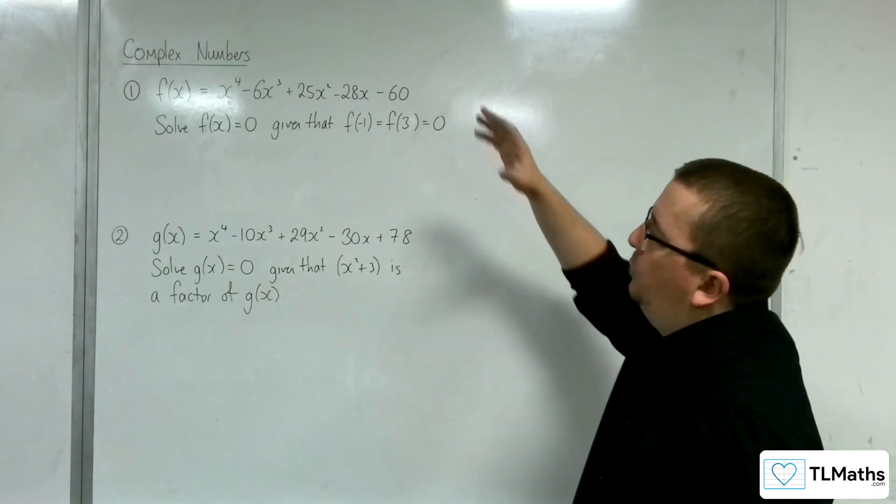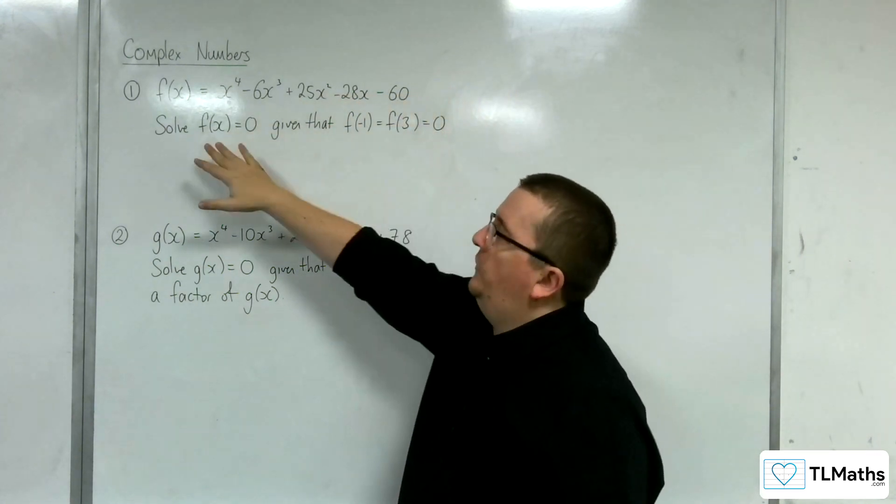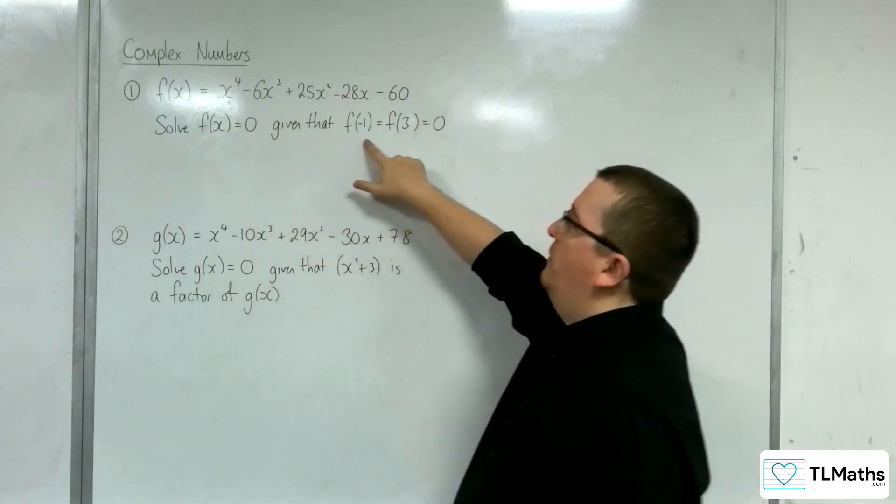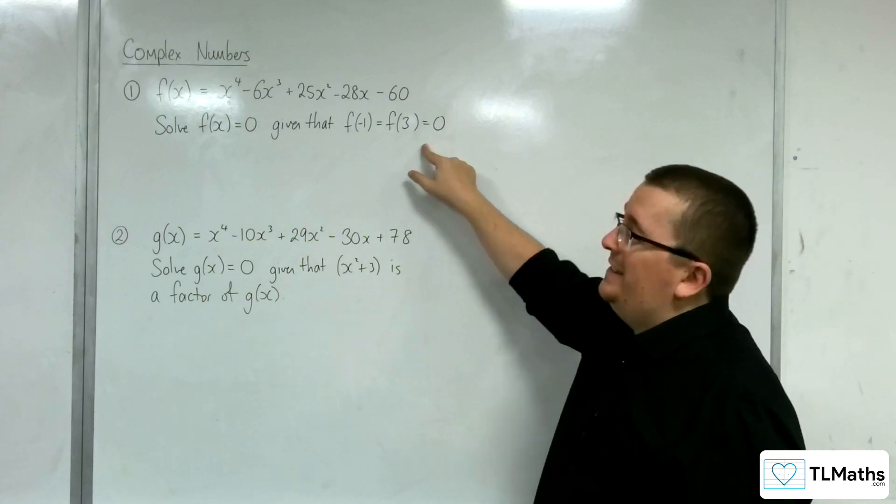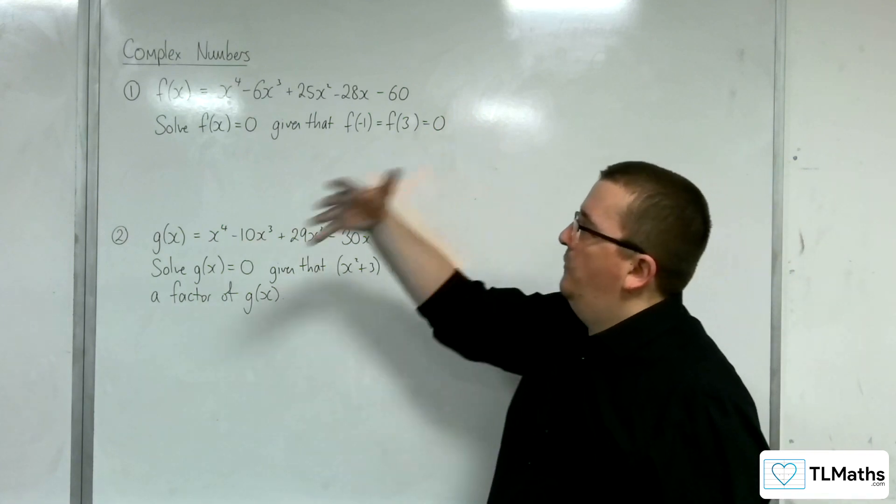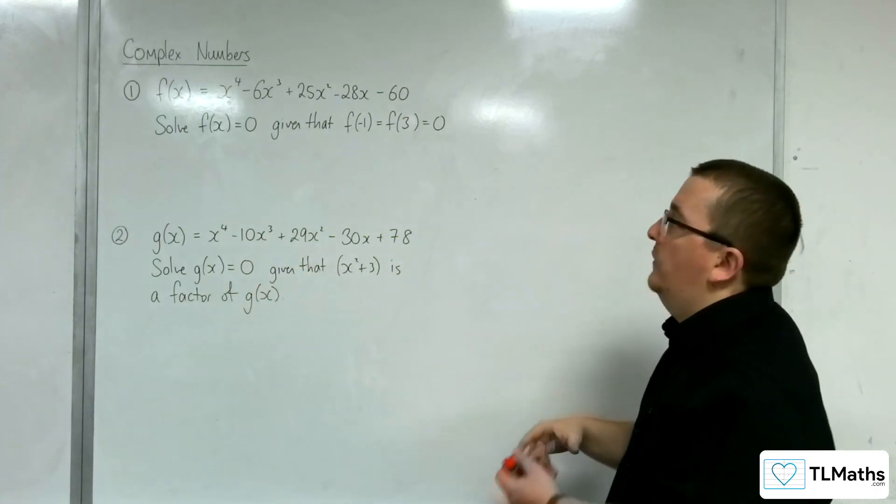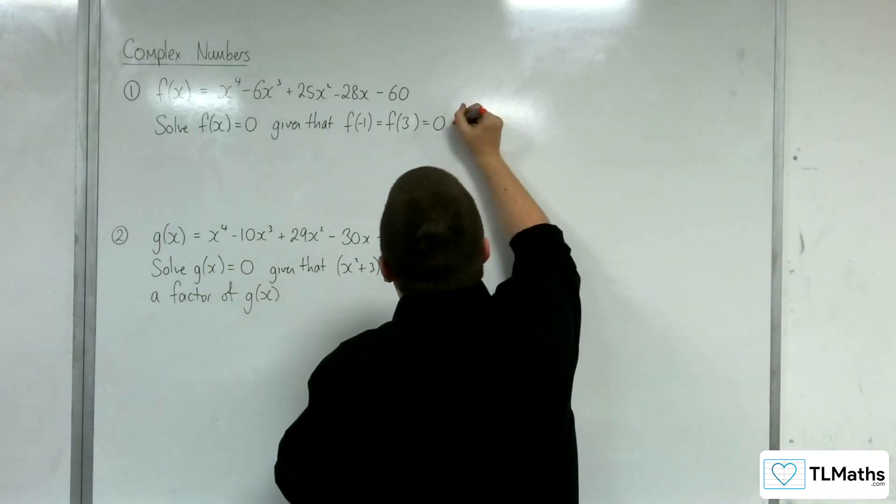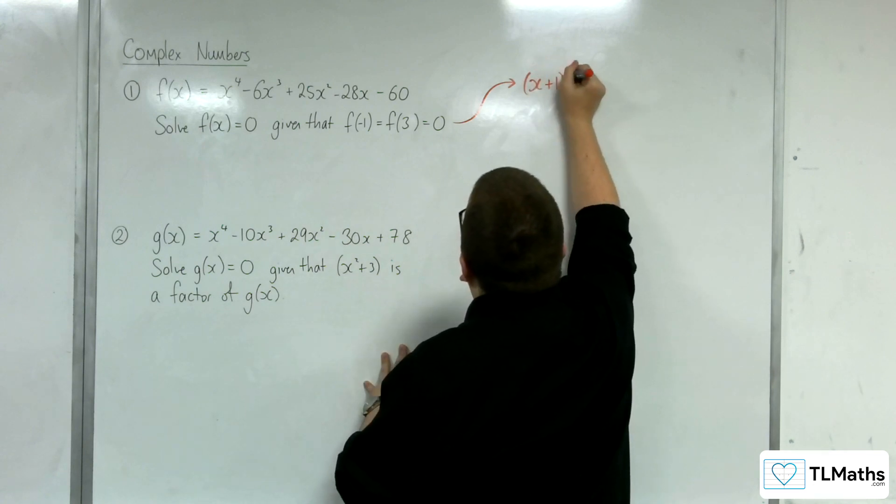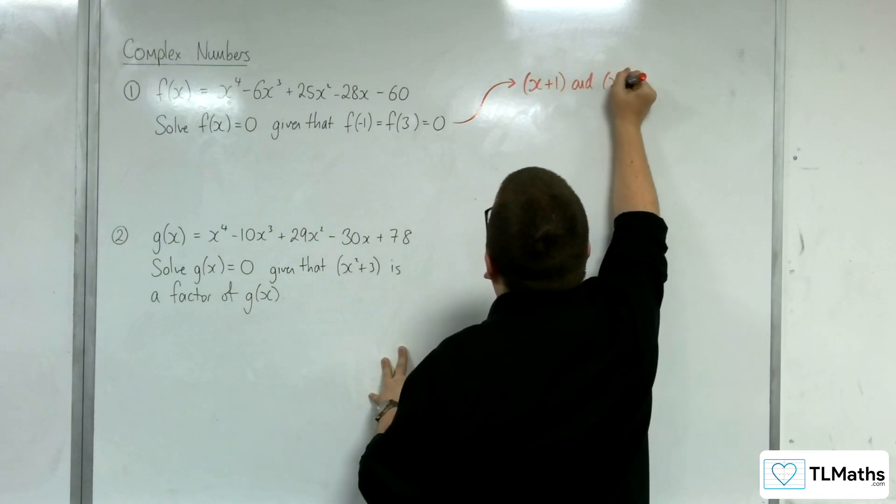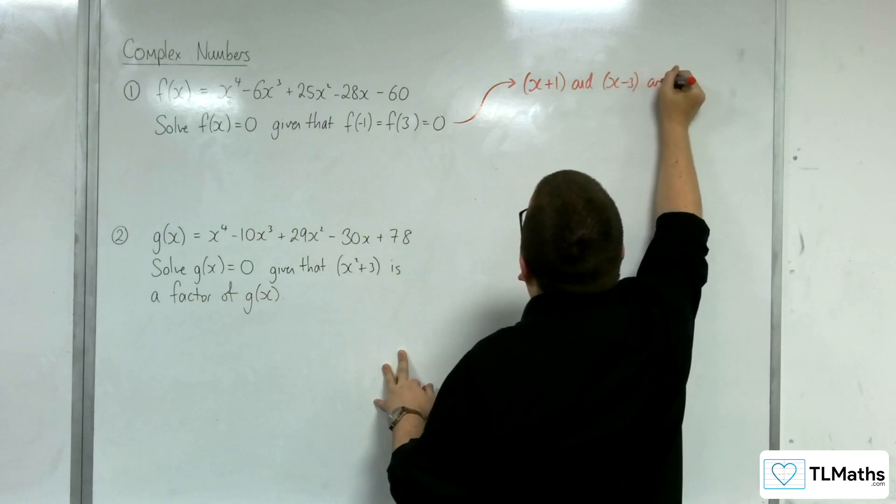With this first one we've got f(x) is equal to this quartic here. We need to solve f(x) = 0, given that f(-1) = f(3) = 0. So what that is another way of saying is that f(-1) is 0 and f(3) is 0, which is telling us by the factor theorem that (x+1) and (x-3) are factors.